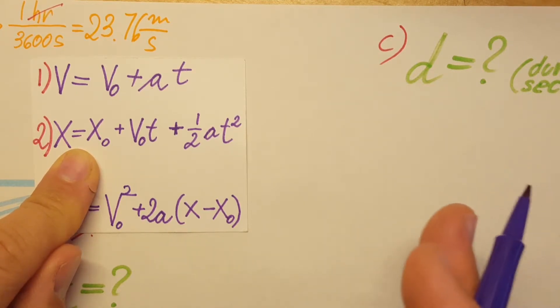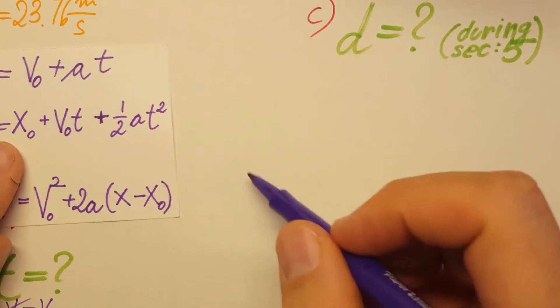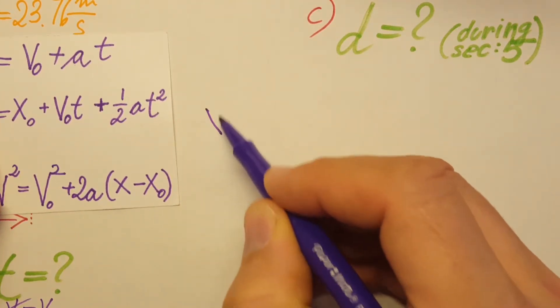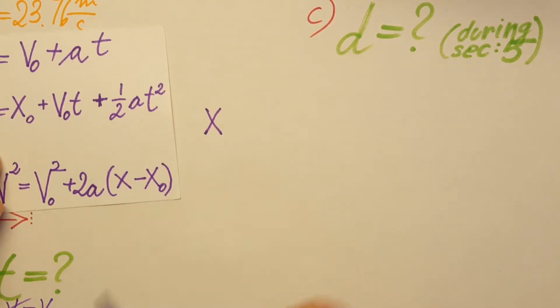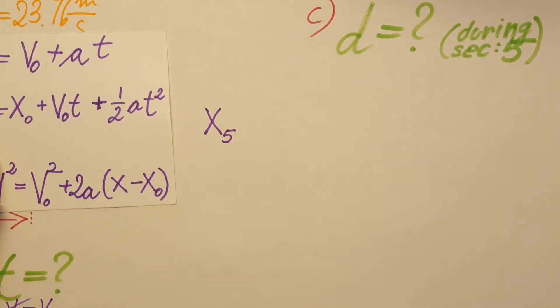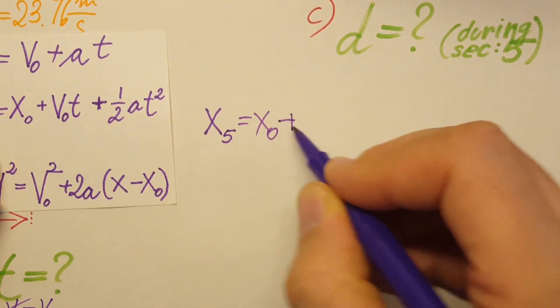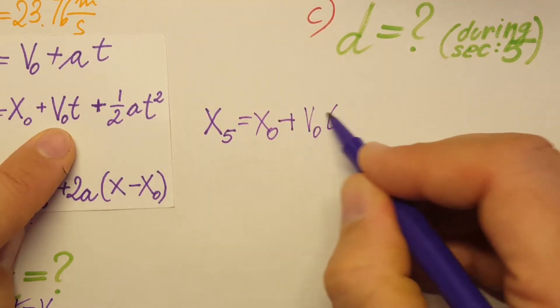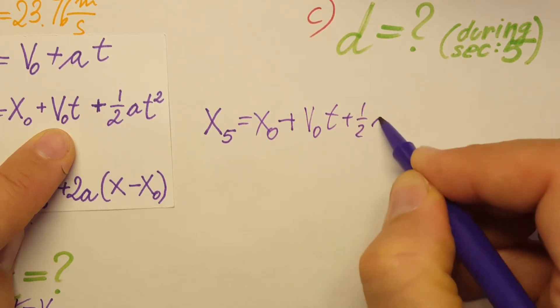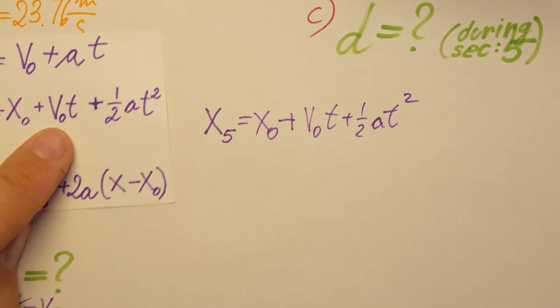Let's calculate. I'll rewrite the formula with a subscript 5 so we know this is at second five: x equals x₀ plus v₀t plus one half at squared. This is at second five.